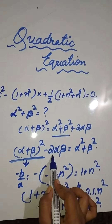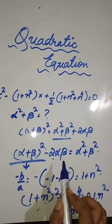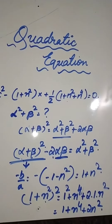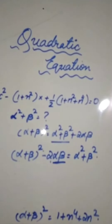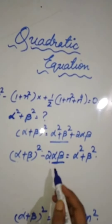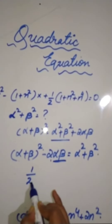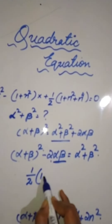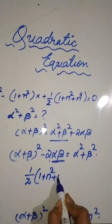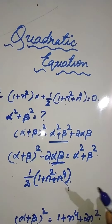Now what is 2αβ? We have to find α × β, which is c/a. So c/a works out to be ½ × (1 + n² + n⁴) × 1.